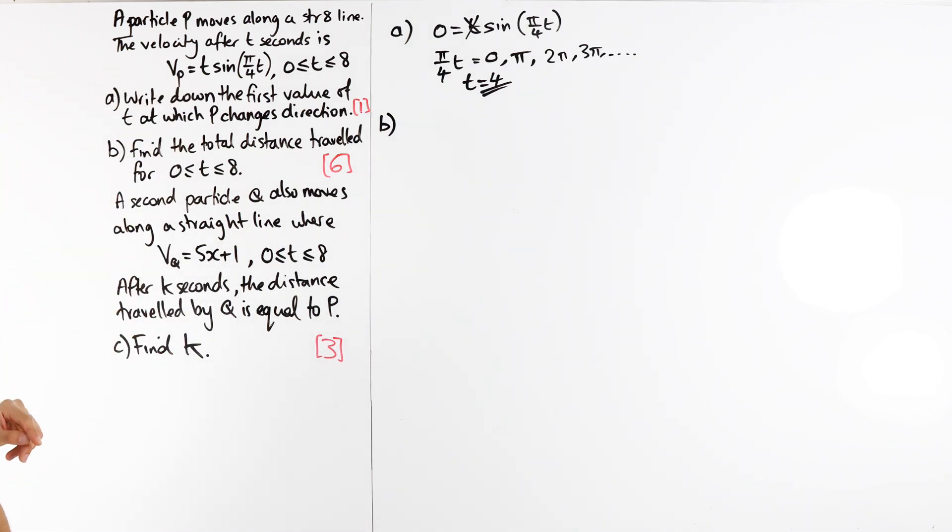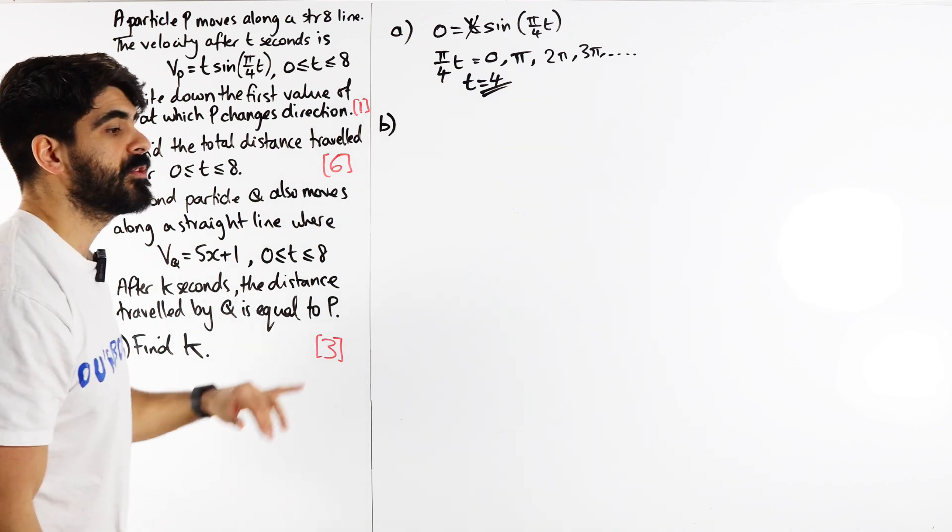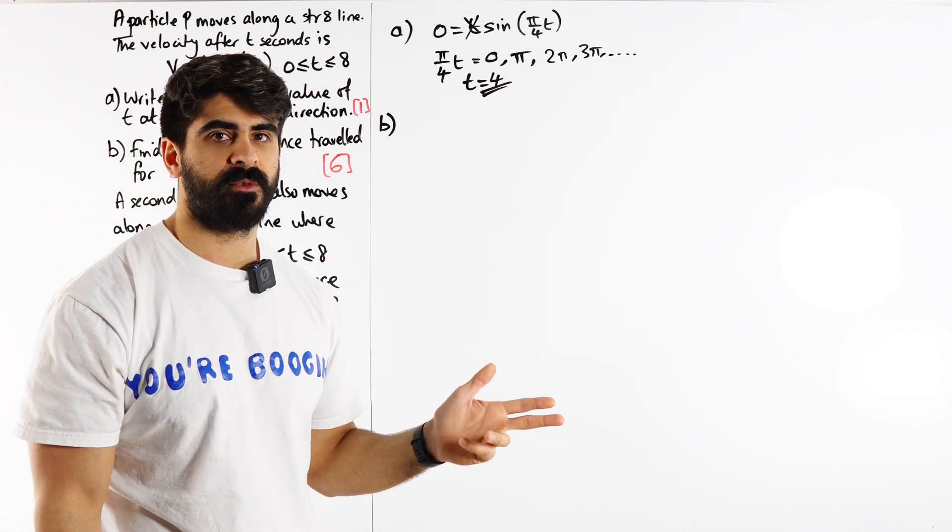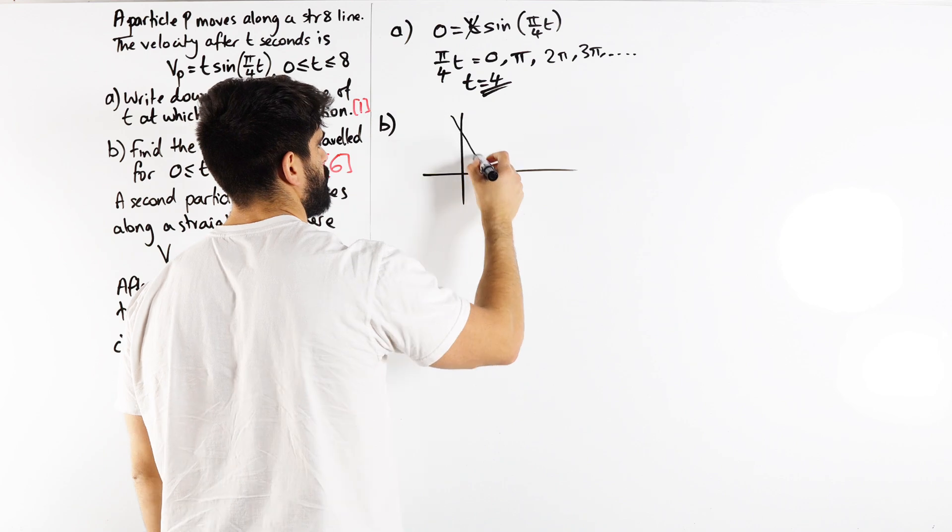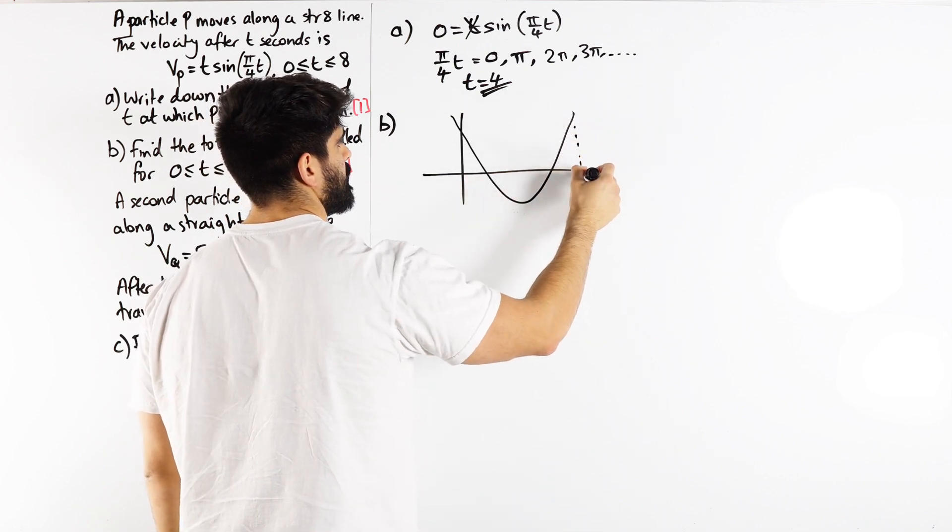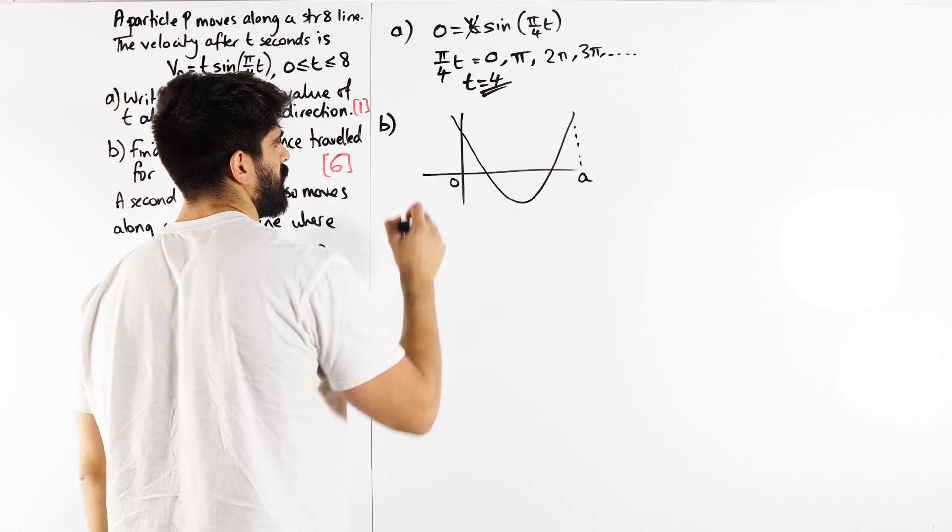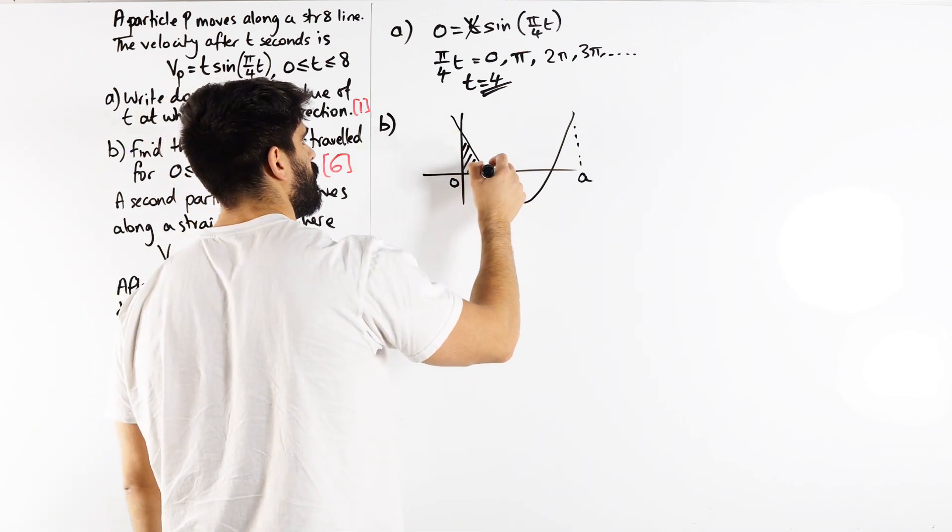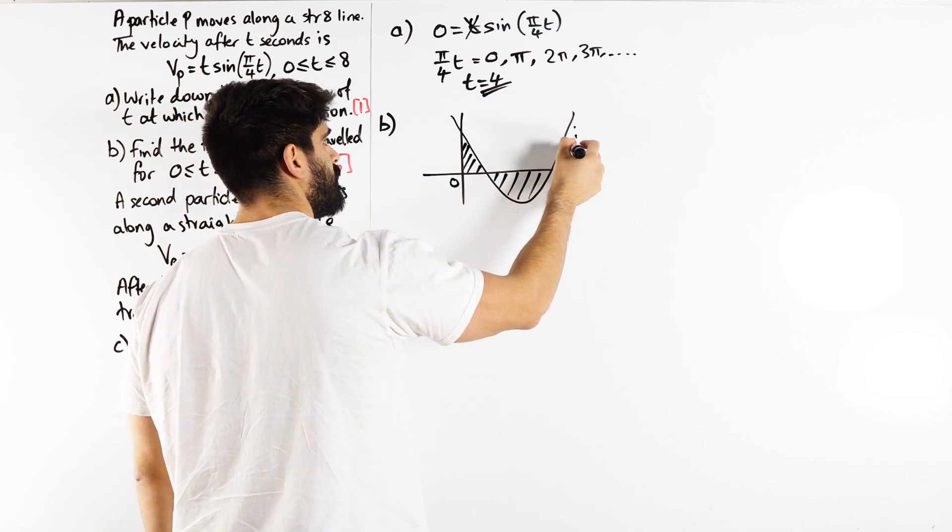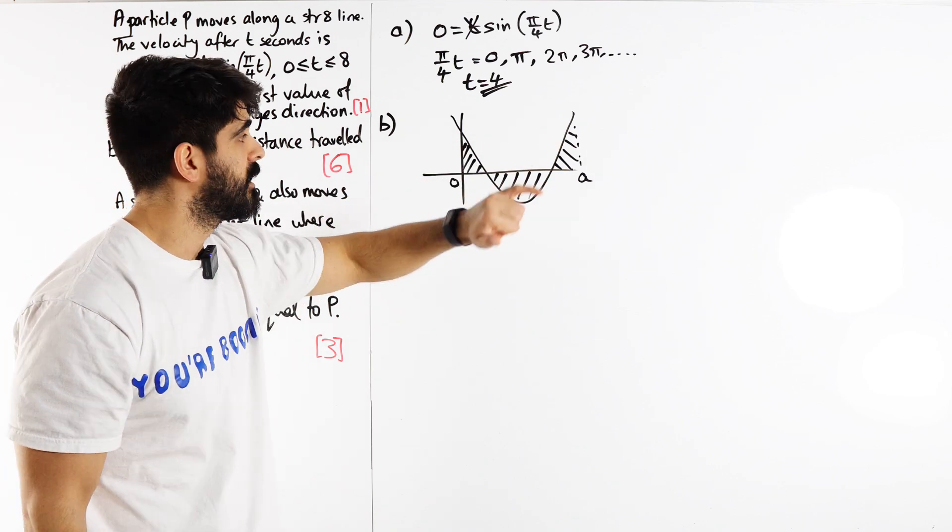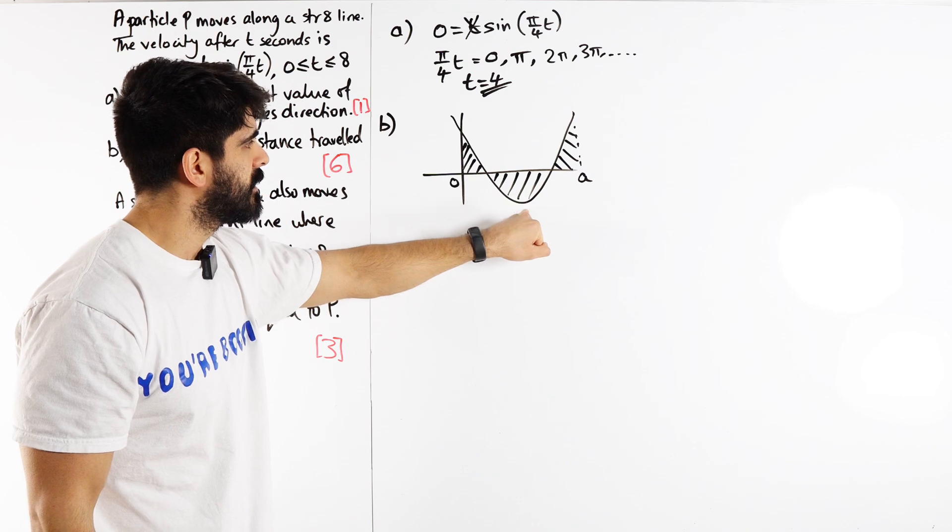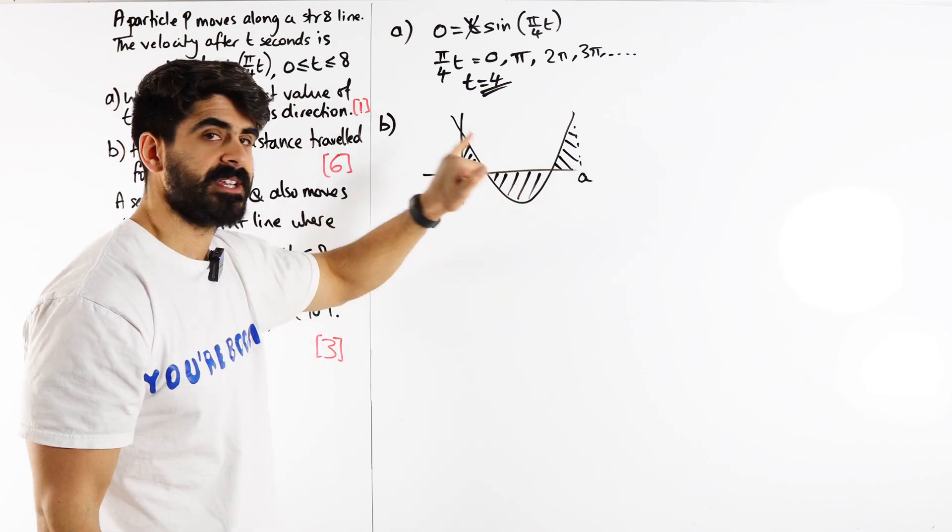Find the total distance travelled by P for t between 0 and 8. When we do this stuff in year 12, what do we always reiterate when it comes to distance travelled? In year 12 we mostly focus on quadratics. If I want to find the total distance travelled between 0 and 8, we're finding the area under the graph. But what do we need to be careful of? Negative side. That will start subtracting from the positive areas.